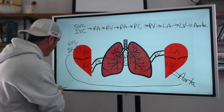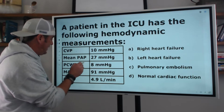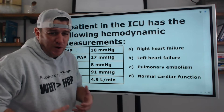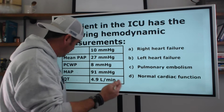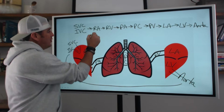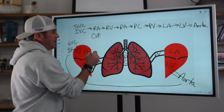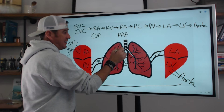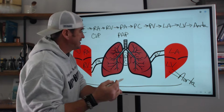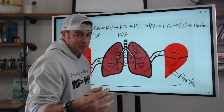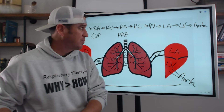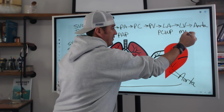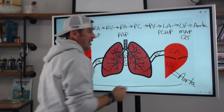Now we have to understand what measurements — CVP, PAP, PCWP, mean arterial pressure, and cardiac output — where do we measure those? The right atrium is CVP, right ventricle, then pulmonary artery pressure, which is PAP. Pulmonary capillary wedge pressure sounds like it should be there, but it is actually a representation of left atrial pressure. So PCWP goes here, and then for the left ventricle we have mean arterial pressure and cardiac output.